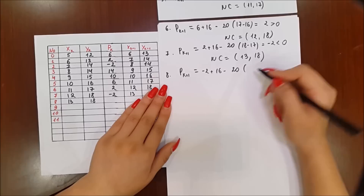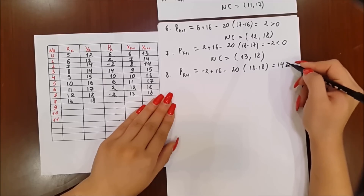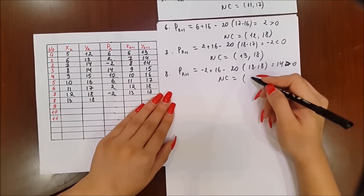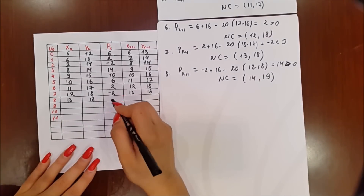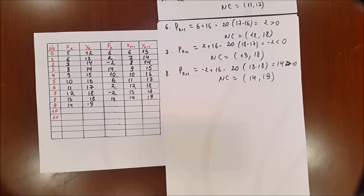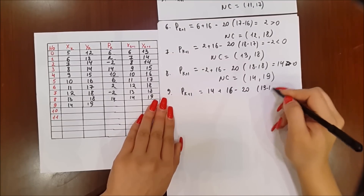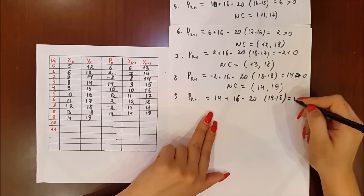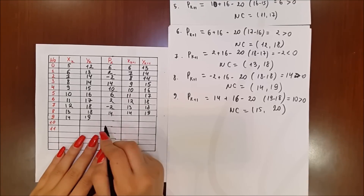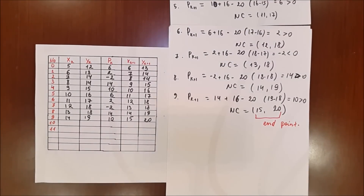In the eighth iteration, pk+1 equals minus 2 plus 16 minus 20 times (18 minus 18), giving pk+1 equals 14, which is more than 0. So the next coordinate is (14, 19), with both x and y increasing by 1. In the ninth iteration, pk+1 equals 14 plus 16 minus 20 times (19 minus 18), giving 10, which is more than 0. So x and y both increase by 1, reaching (15, 20), which is the endpoint — we stop the calculation here.